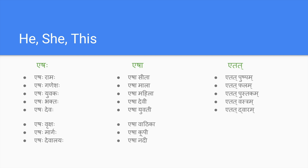You can also say 'aesha vatika, aesha kupi, aesha nadi' and 'etat mitram'. The question words remain the same regardless of distance - kaha, ka, and kim do not change. So: 'etat pushpam' - 'etat kim' (what is this?). Kim, kaha, ka - these three words do not change according to distance. So the three new words we are learning are aesha, aesha (feminine), and etat.